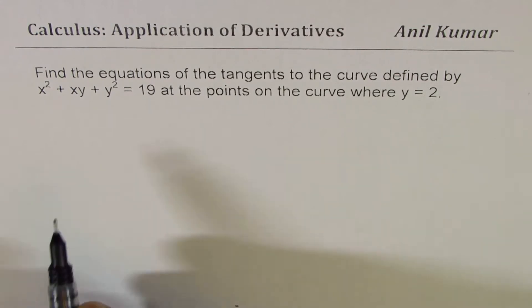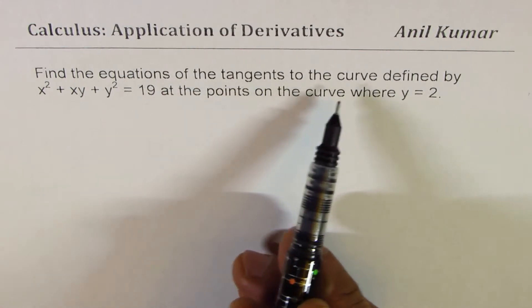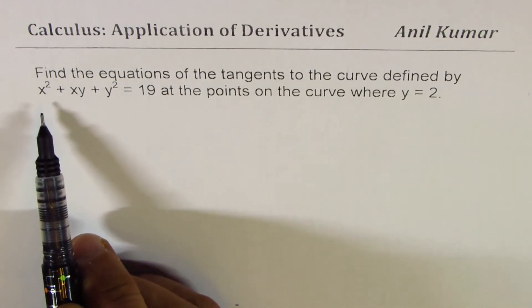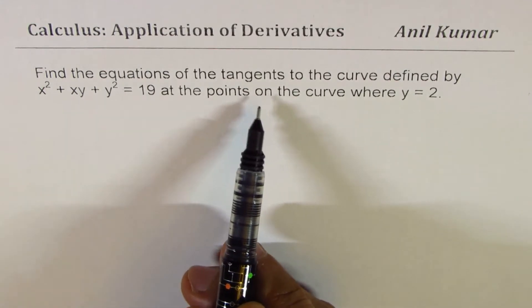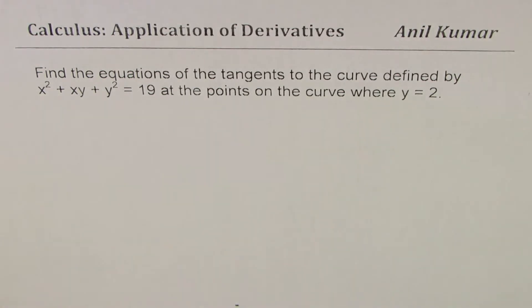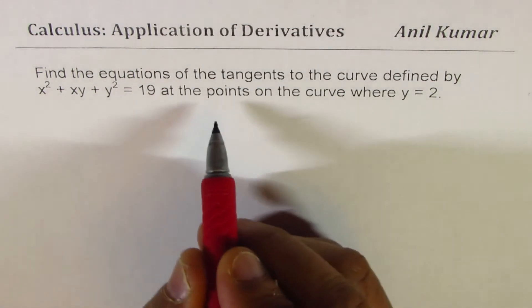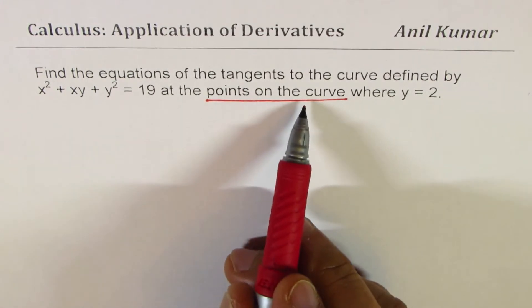The question is, find the equations of tangents to the curve defined by x² + xy + y² = 19 at the points on the curve where y = 2. So, we are given that the points are on the curve. So they are not external points.